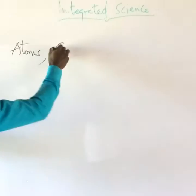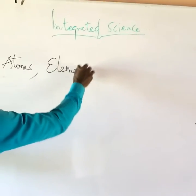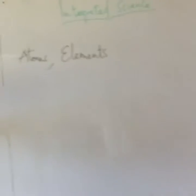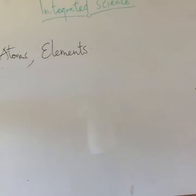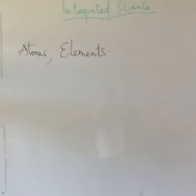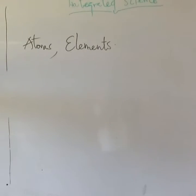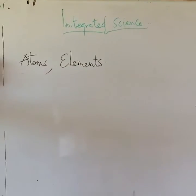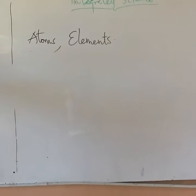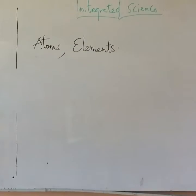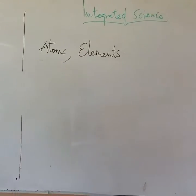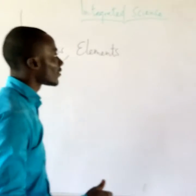Today we'll be looking at the electronic configuration of some elements, basically the first 20 elements. We'll be taking our time to draw some of them. We are going to talk about the electronic configuration of the elements. When we are talking about electronic configuration, we are looking at how electrons are arranged on the shells of an atom.